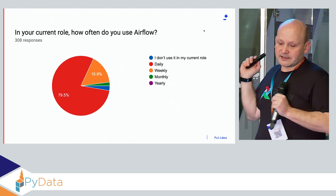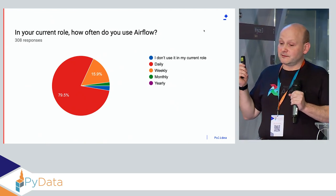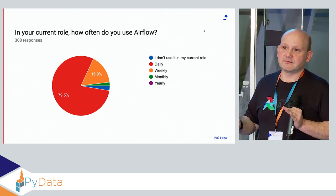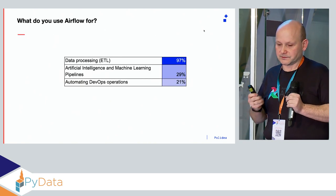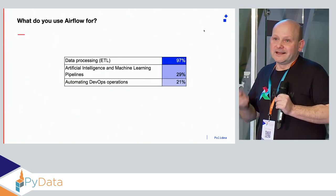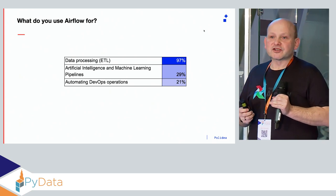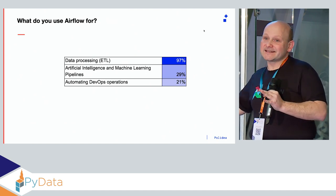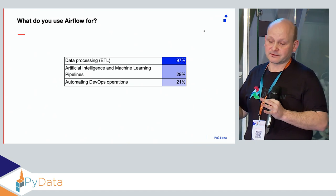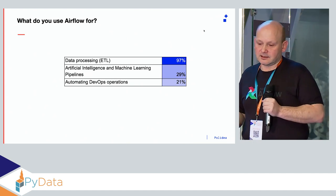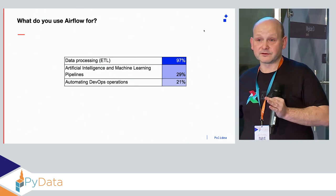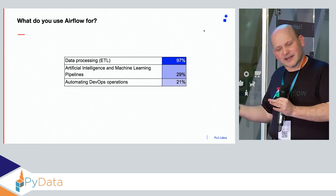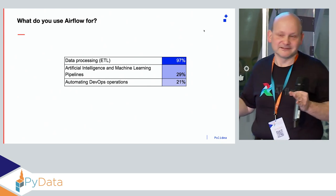A few general numbers. Most people use Airflow daily or weekly — it becomes your daily tool. What do people use Airflow for? A lot has been said about machine learning frameworks, but Airflow is more targeted for traditional ETL processing, though 30% of people use it for machine learning pipelines. Almost everyone uses it for data processing. Some use it for automating DevOps — a kind of CI equivalent. Yes, you can use Airflow for that.